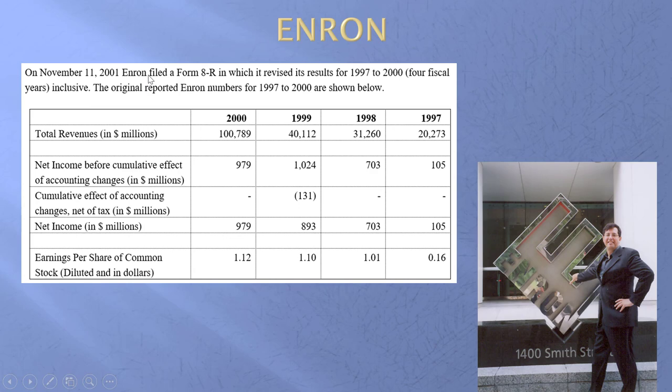Let's have a look at Enron. Way back, Enron filed a Form 8-K and revised its results for 1997 to 2000. Watch these headline numbers. Revenue: $20.2 billion — just made 20 billion. $31.2 billion. $40.1 billion — just made 40. $100 billion. Net income: $1.05 billion, $703 million, $1.024 billion.